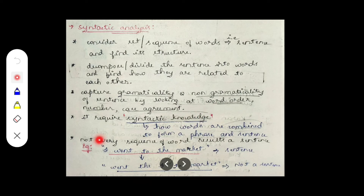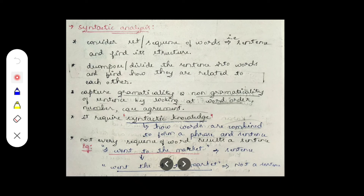Not every sequence of words results in a sentence. Combining more than one word doesn't automatically make a meaningful sentence. Consider the example: 'I went to the market' — that is a sentence. Here 'I', 'went', 'to', 'the', and 'market' are all individual words, and all of them are meaningful. We are not combining any meaningless words here.